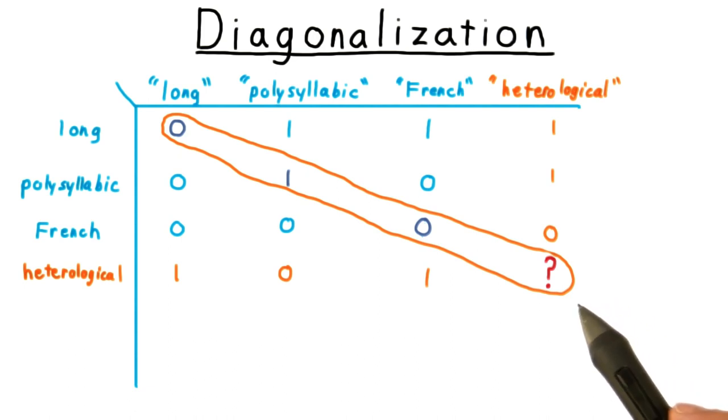On the other hand, if we say that it is not heterological, causing us to put a zero here, then it doesn't apply to itself, and it is heterological. So there really is no satisfactory answer here. Heterological is not well defined as an adjective.